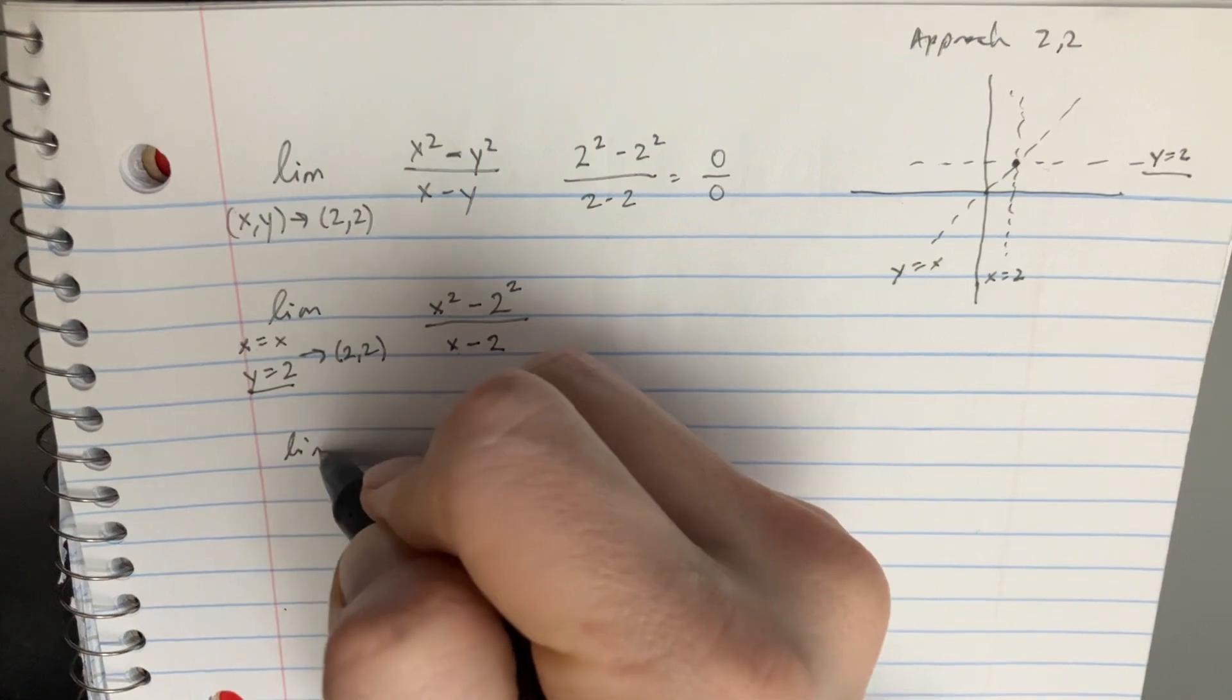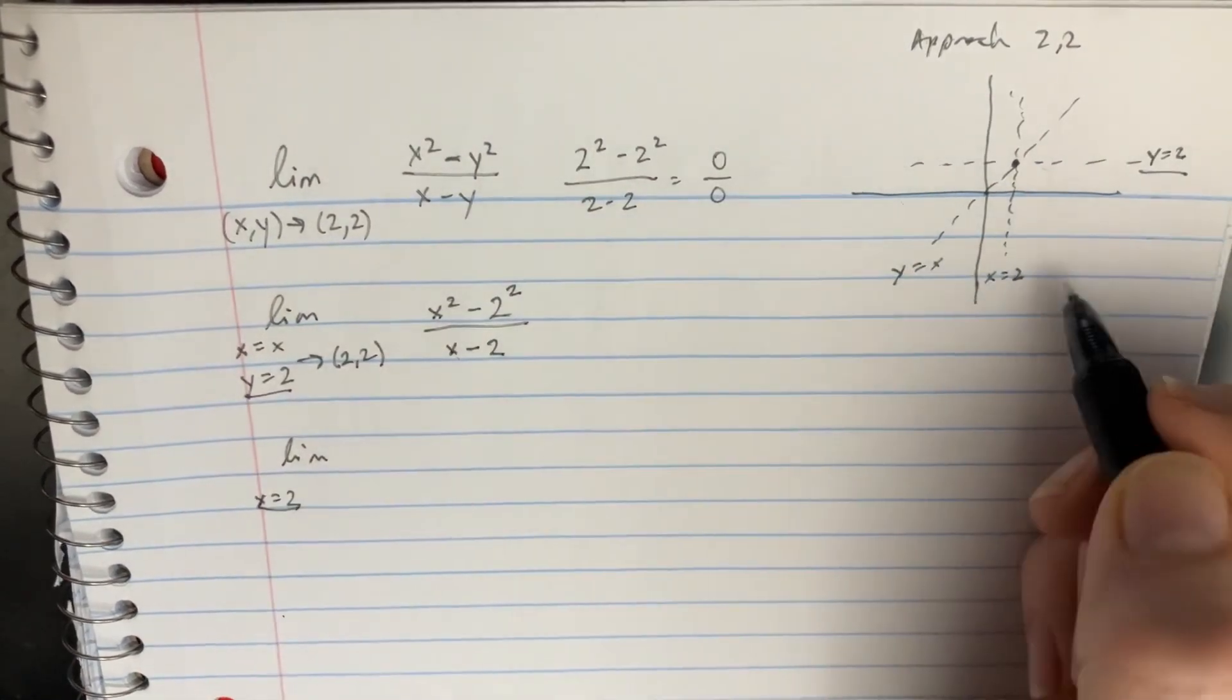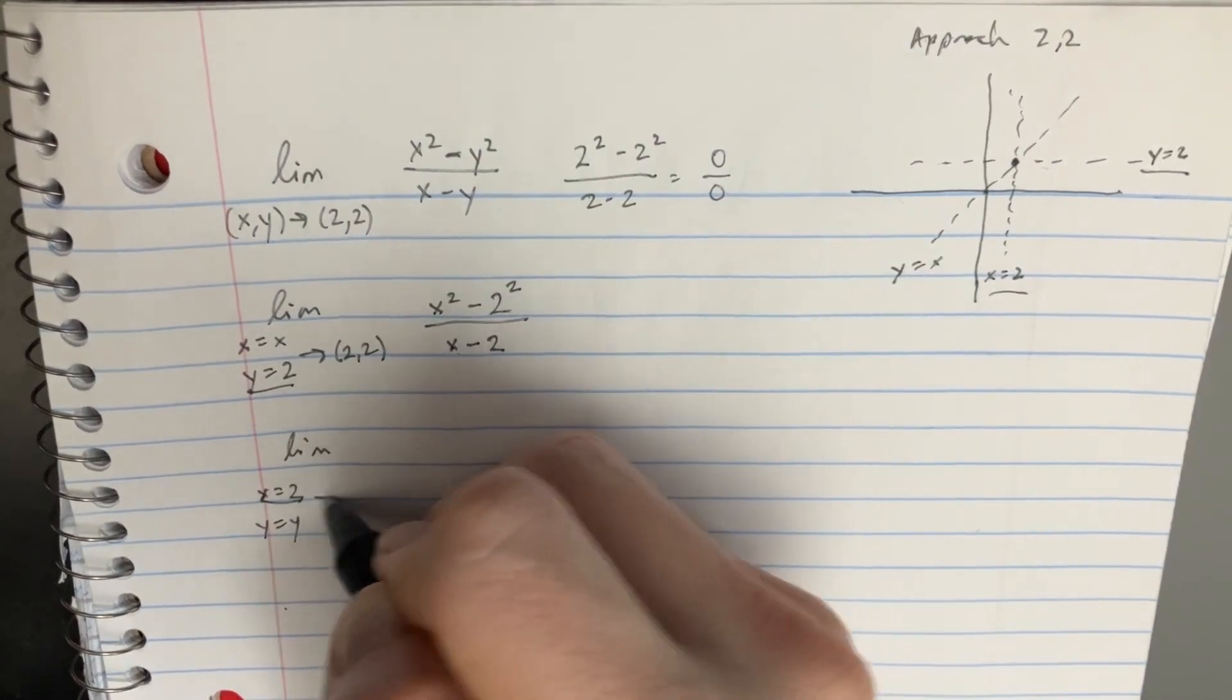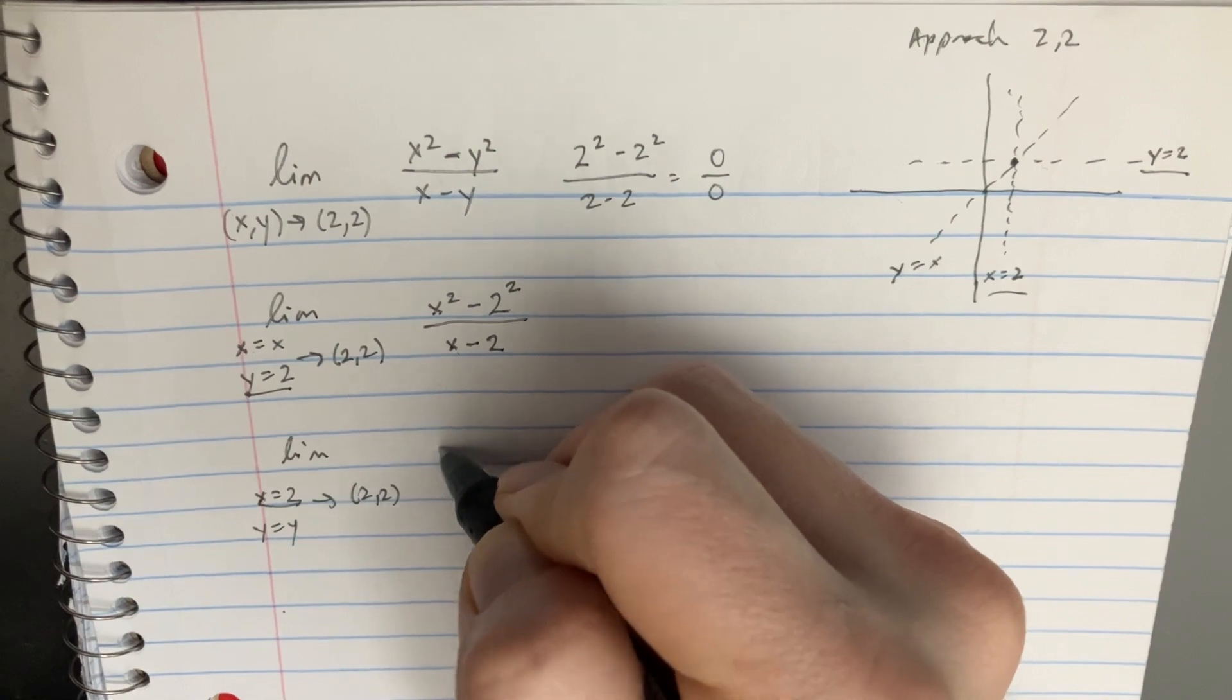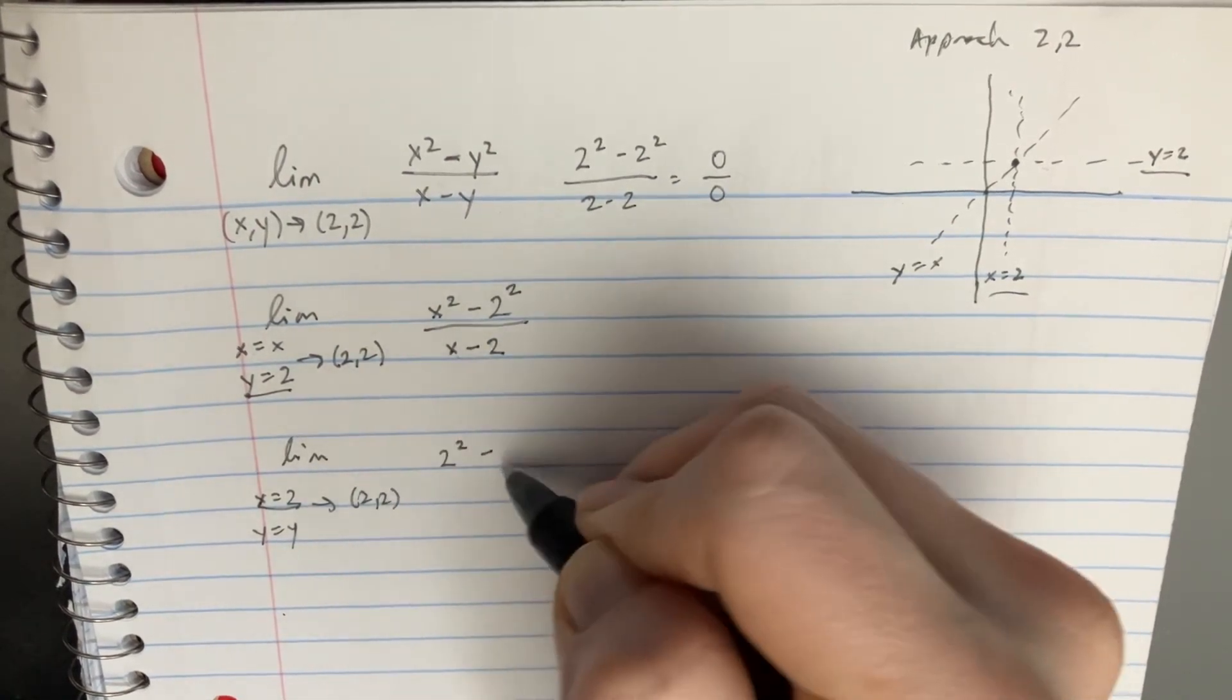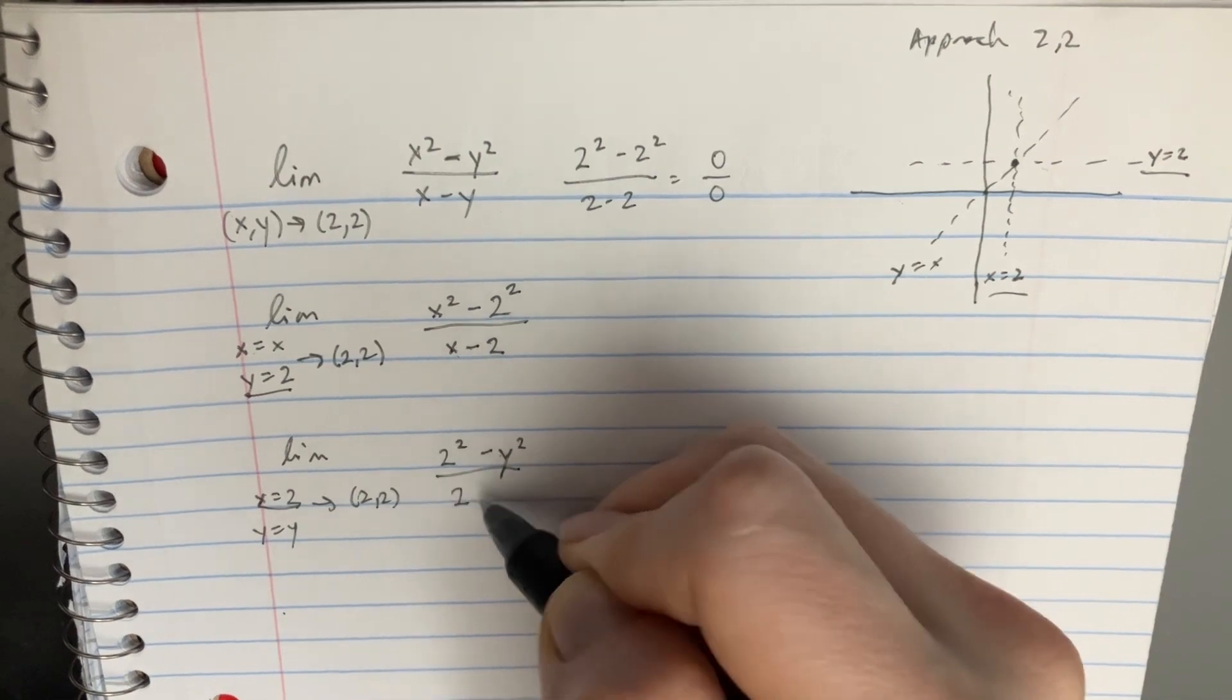The next one we do is going to be x equals 2. That's going to be this one, and then y equals y. We're going to approach the same point (2,2). And so now x equals 2 and y equals y.